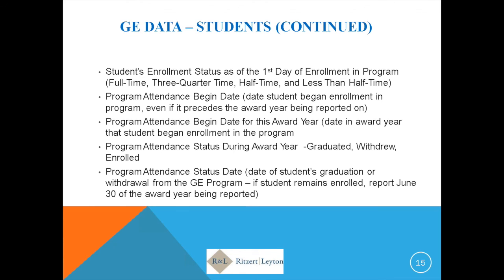You'll also report the student's enrollment status as of the first day of enrollment in the program — full-time, three-quarter time, half-time, or less than half-time — and the date the student began enrollment. This begin date might precede the award year you're first reporting for the student, such as when a student wasn't a Title IV recipient until a subsequent award year.